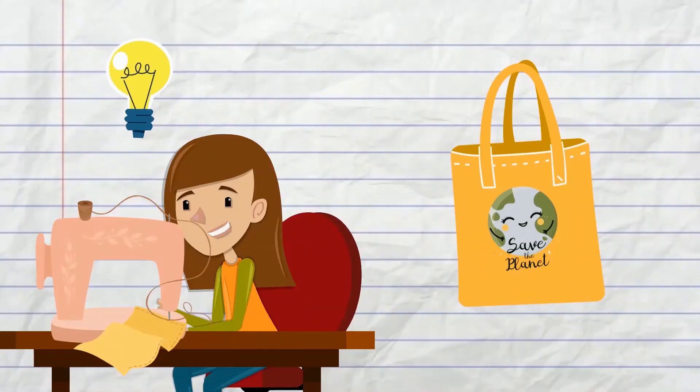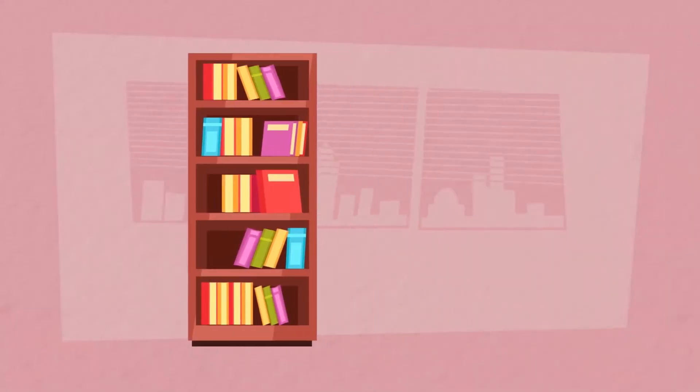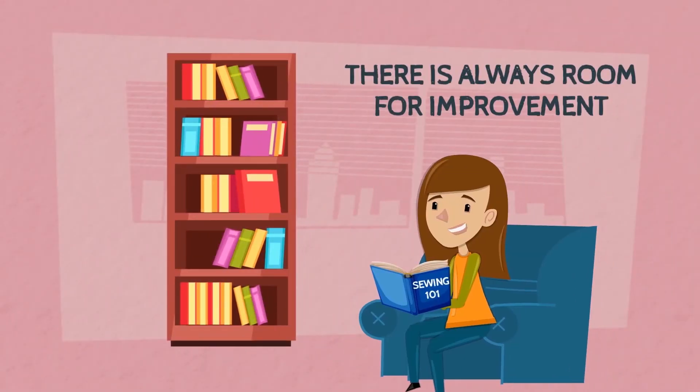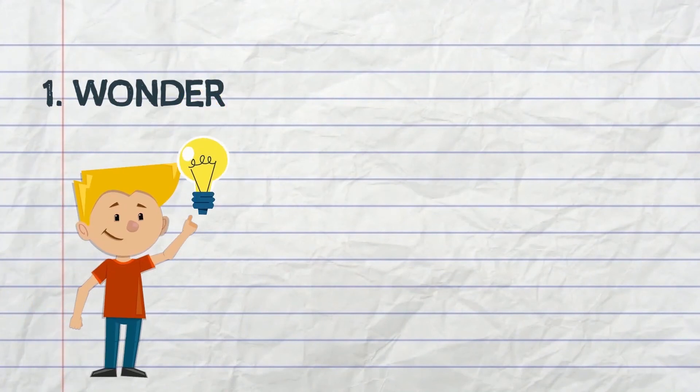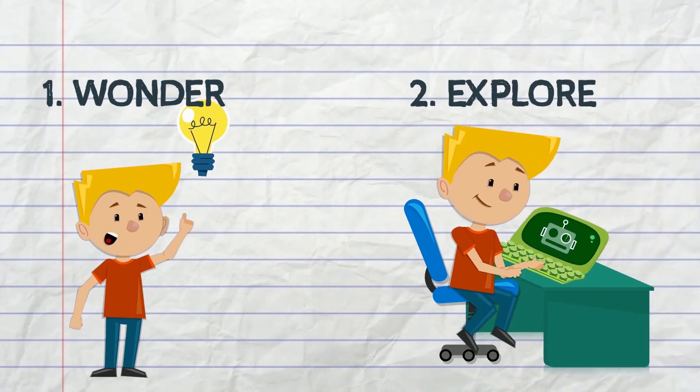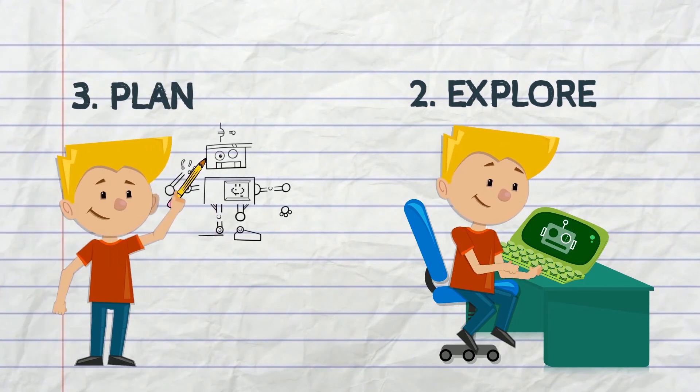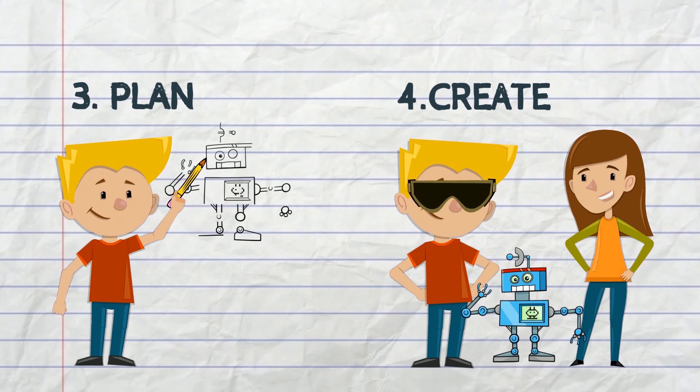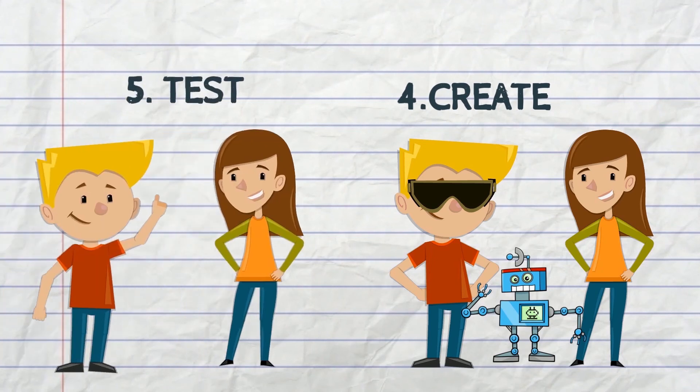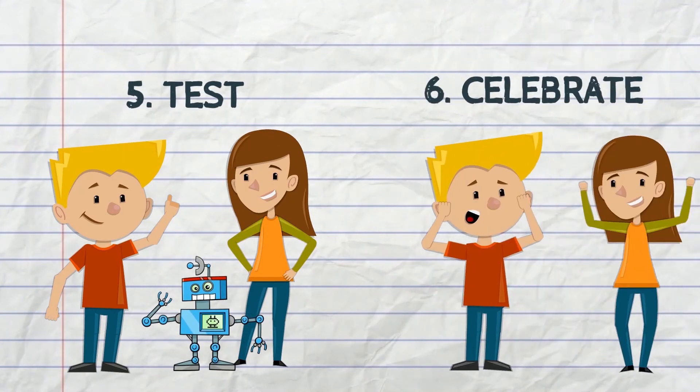The creative thinker redesigns. The creative thinker redesigns or they improve their creation. The creative thinker believes that there's always room for improvement. Again, the process is: one, wonder, look for an opportunity; two, explore, investigate it; three, plan, grab an idea; four, create, make it real; five, test, try it out; six, celebrate, learn and grow; seven, redesign, improve it.